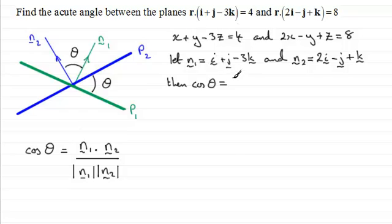And I'll just put it down in stages here, if we do the dot product between our two normals, we're going to have 1 times 2, plus, and then we've got 1 times minus 1.